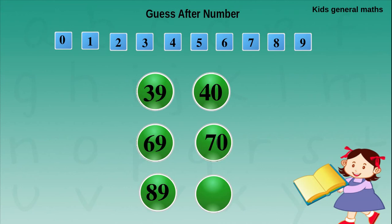Next they are given 89. For 9 we are going to write it as 0. For 8 we are going to find the after number. After 8 is 9. So after 89 is 90.